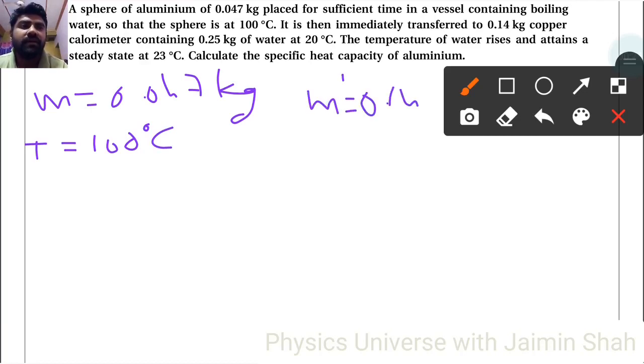The copper container has mass 0.14 kg. The calorimeter contains 0.25 kg of water at 20°C. The temperature of water rises and attains a steady state at 23°C.